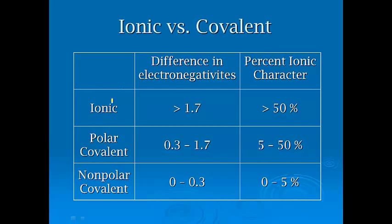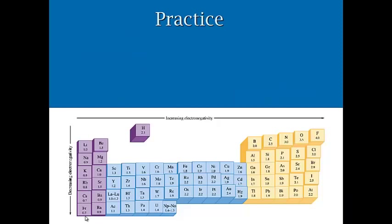This is just a chart here that shows you when ionic is greater than 1.7, polar covalent is somewhere in the middle of those cutoffs, and nonpolar covalent is 0.3. When it's right on the line, just put it in both categories because we're really taking a large spectrum and arbitrarily assigning numbers, but you can still put them into those groups.